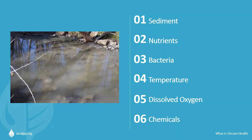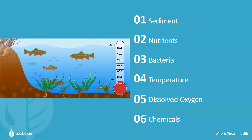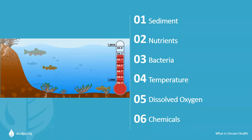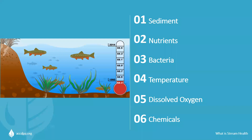Coliform bacteria are used as an indicator of the sanitary quality of the water for drinking and swimming. Fecal coliform bacteria in streams can come from a variety of sources including sewage, animal feedlots, pasture land, and cities. The discovery of fecal coliform bacteria in streams is an indication that disease-causing organisms may be present. Cool water temperatures and high dissolved oxygen levels are critically important to fish and other aquatic organisms. If the water is too warm or the oxygen level is too low, most fish won't be able to survive. Hence, measurements of temperature and dissolved oxygen are important indicators of stream health.